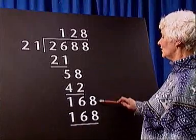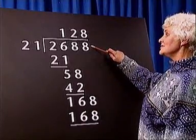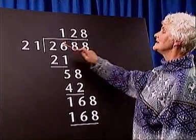accurately without using a calculator and showing all your workings out. In this example, we will divide 2688 by 21.